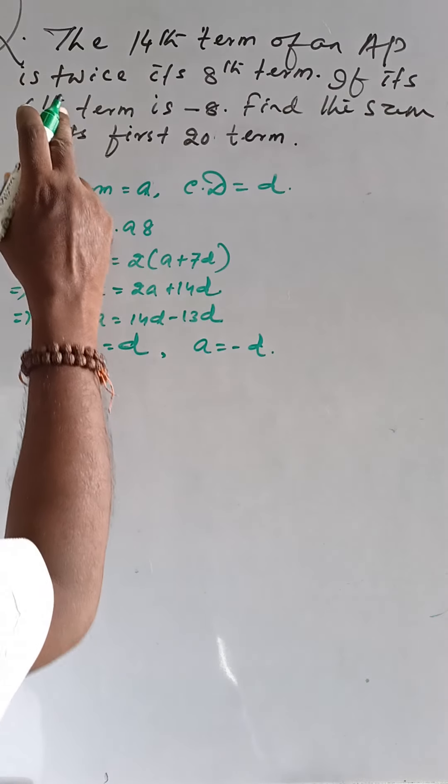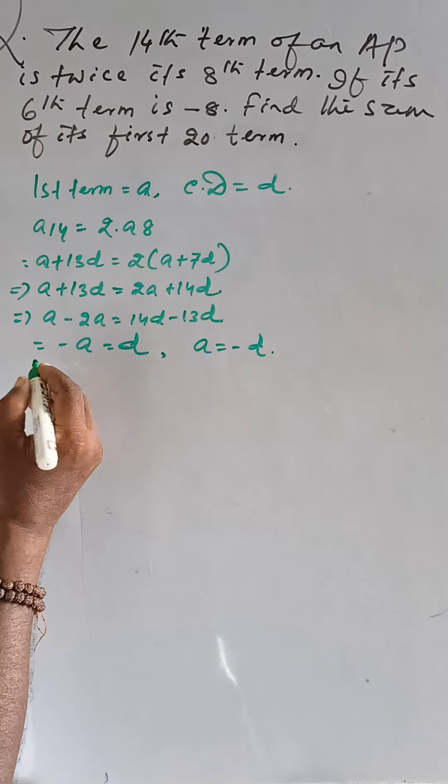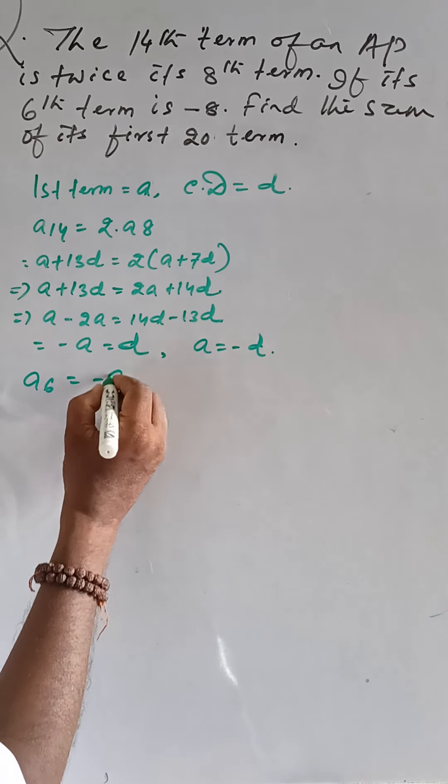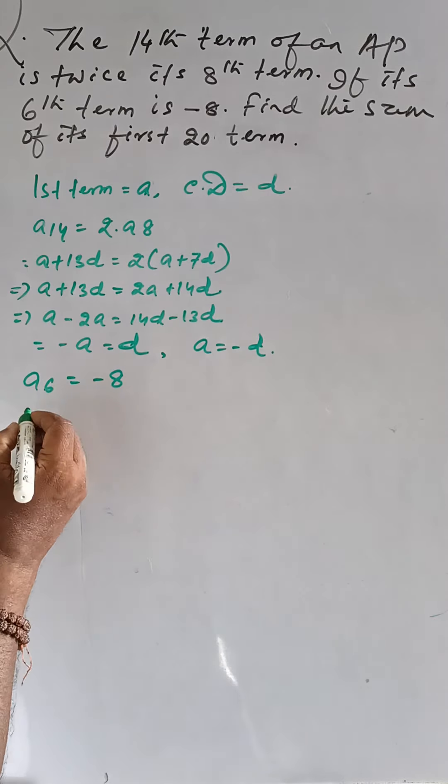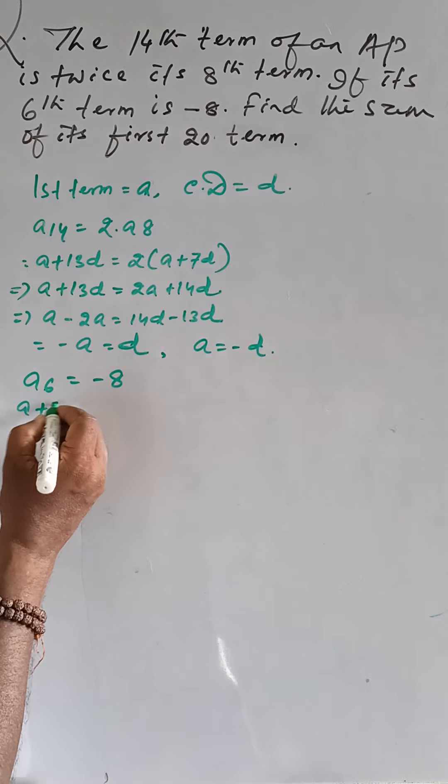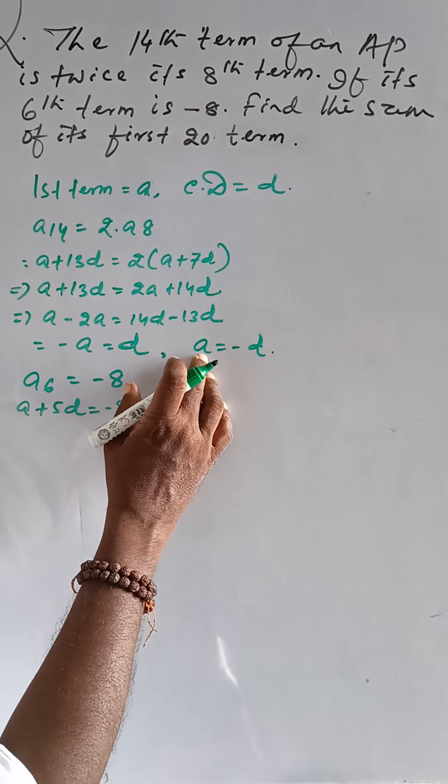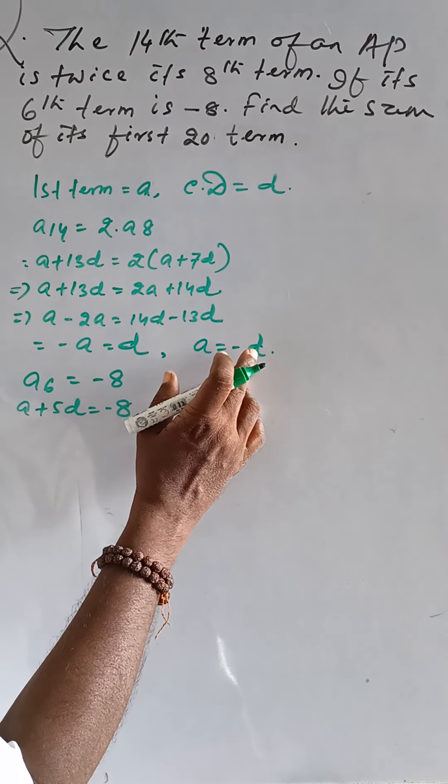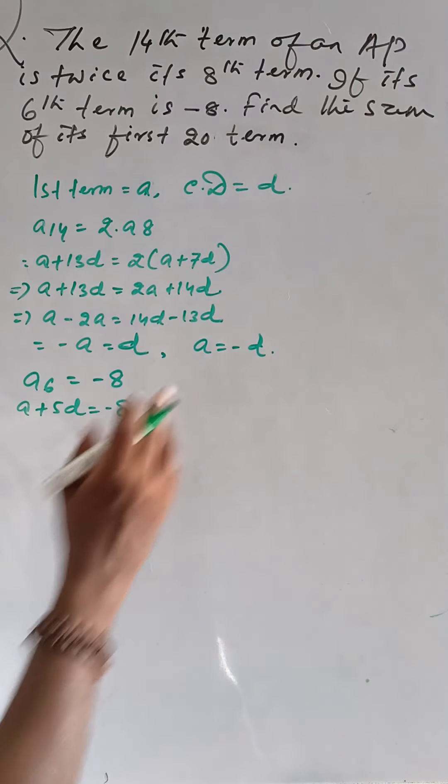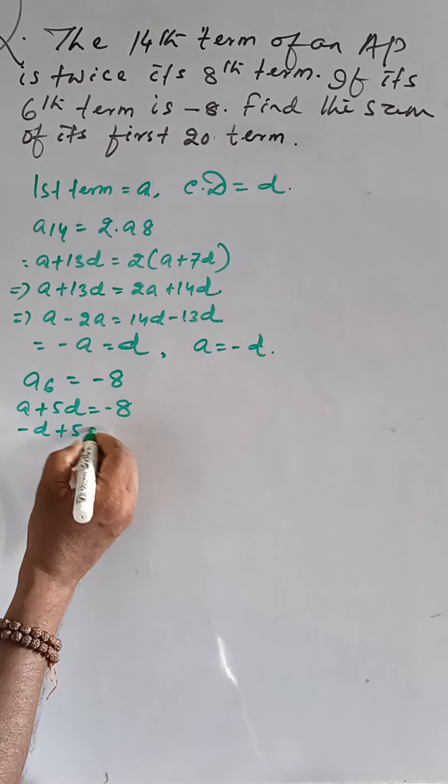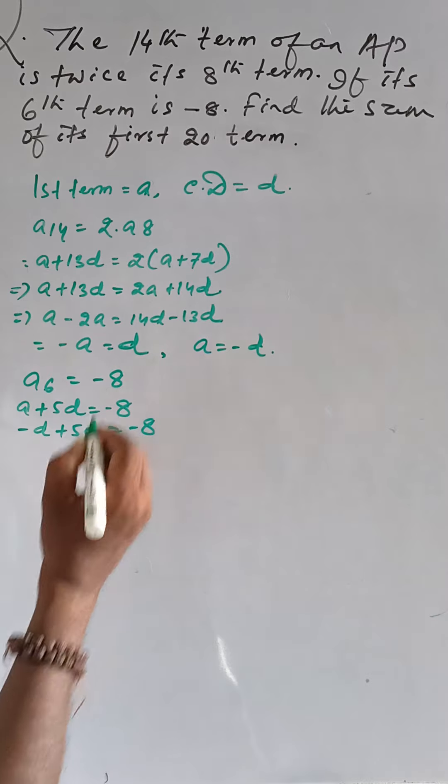Then at the second part, the 6th term is equal to minus 8. That means A plus 5D is equal to minus 8. Putting the value of A at this part as minus D,